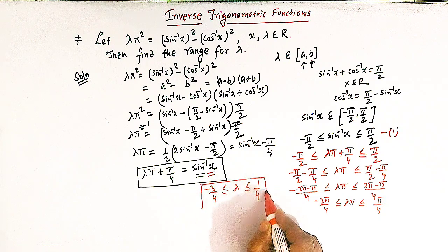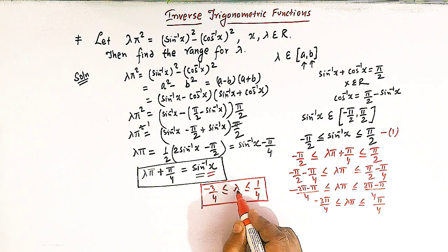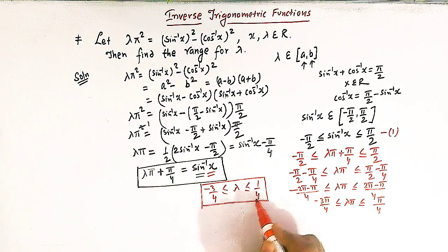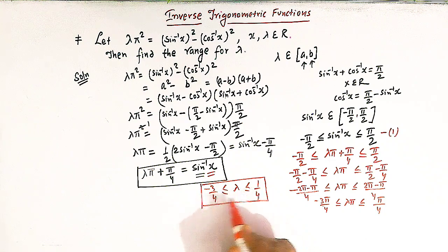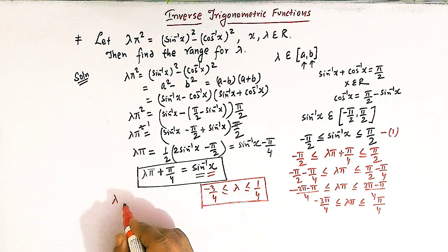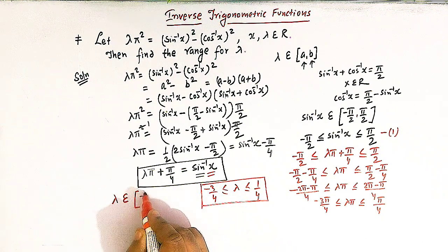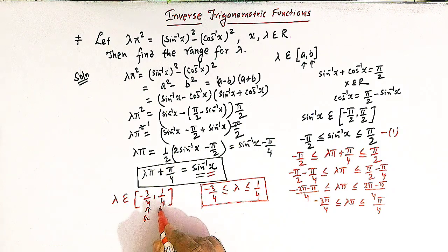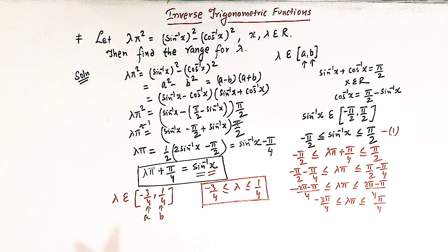So the required range for λ is -3/4 ≤ λ ≤ 1/4. We can see that λ lies between -3/4 and 1/4, including these two extreme points. The interval to which λ belongs is [-3/4, 1/4]. So the value of a is -3/4 and the value of b is 1/4. This is how, by making use of the concepts of inverse trigonometric functions, we can solve these kinds of problems.